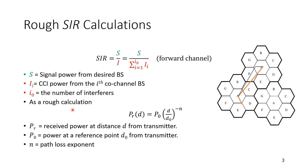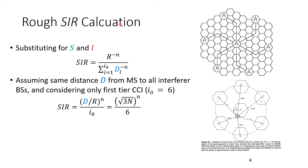The amount of power received equals the transmitted power times a factor divided by distance raised to the power minus n, where n is the path loss exponent — equal to 2 in free space. Since we fix the power and relative channel conditions, what remains is the distance. So we can represent received power in terms of distance, and the SIR becomes R raised to the power minus n divided by the sum of distances from the interferers.